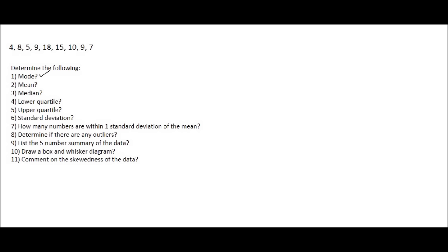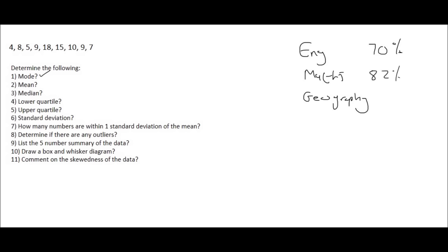The mean stands for the average. So let's say you had three subjects: English, Maths, and Geography. And let's say your marks for each of them were 70% for English, 82% for Maths, and 64% for Geography. How would you work out your average? Well you would add them all together and then you would divide by three.